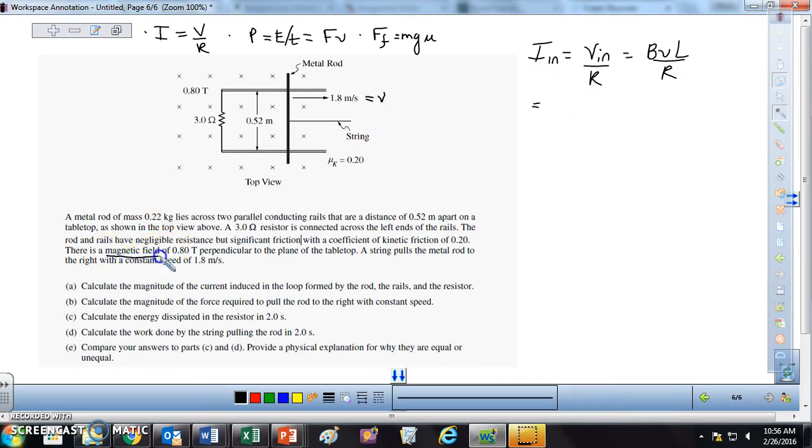So plugging in our values, we have that. The magnetic field is our 0.8 Tesla times how fast it's going, the 1.8 meters per second, times the length of the rod, which we just care about in this part, which is 0.52 meters, divided by any resistance in our circuit, which is our 3 ohms. When we go to this, we get 0.25 amps as our induced current. So that's all for A.